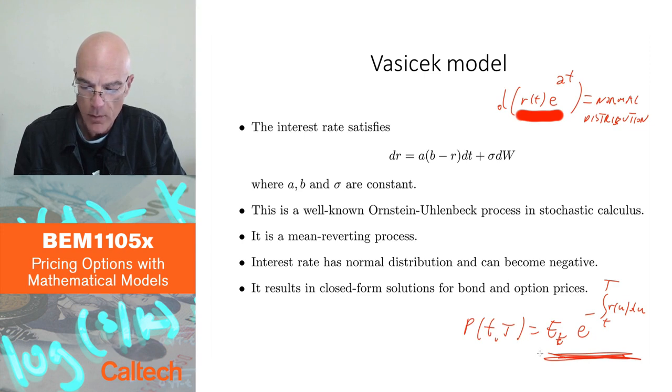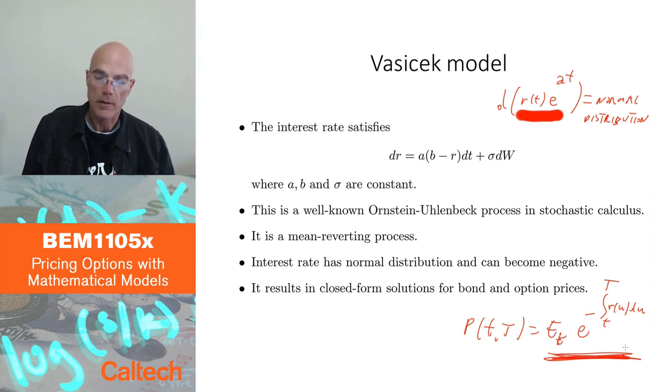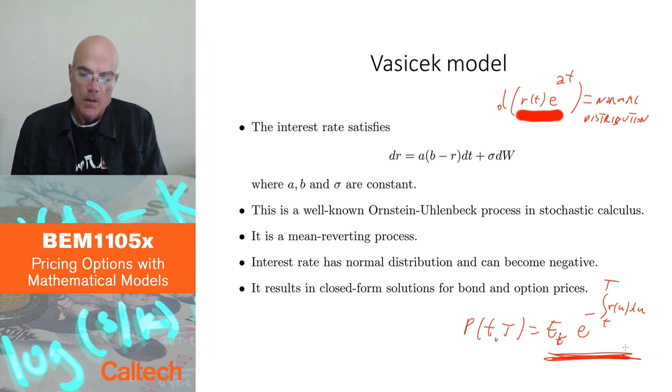So typically, you do like to have this right-hand side explicit. As long as the model is realistic enough, you appreciate if it's actually an explicit solution, an explicit formula. And with Vasicek, you have that. And not only for bonds, even for options on bonds, which is less important though. It's more important to have it for bonds.